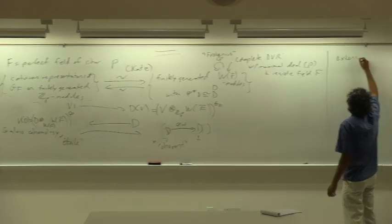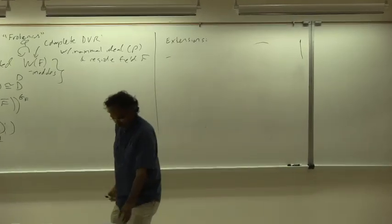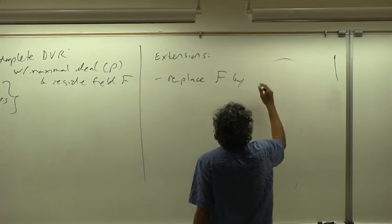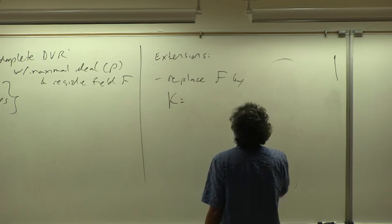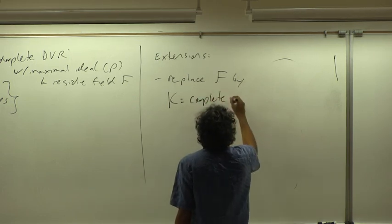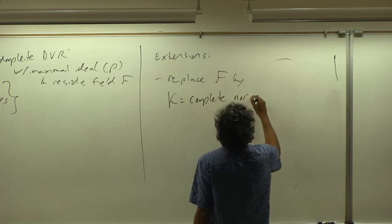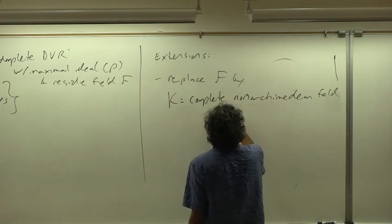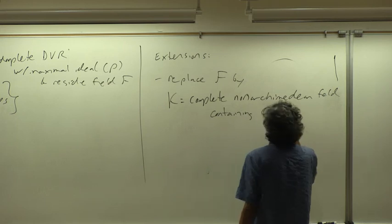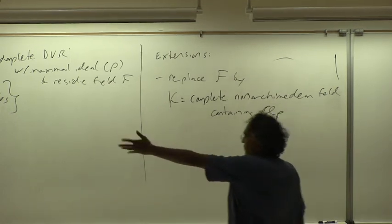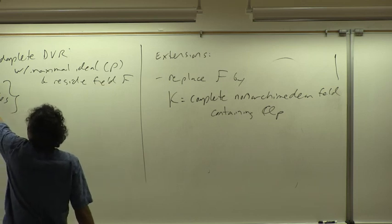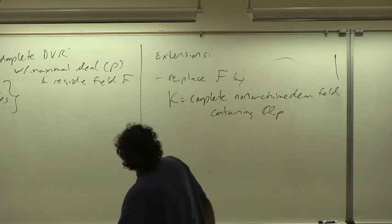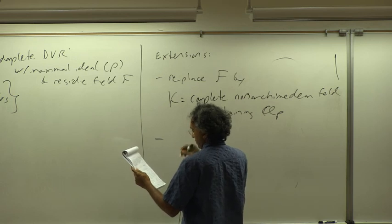One thing I want to do is get out of characteristic p. K is going to generically be a complete non-Archimedean field of mixed characteristics — so it contains Q_p. In the mixed characteristic situation, I don't a priori have Frobenius acting on the base field, so I have to do something else. But we sort of already know what to do based on what Peter said.